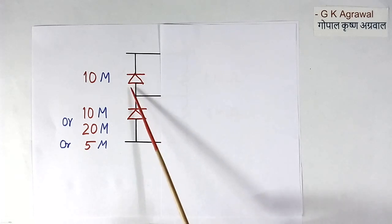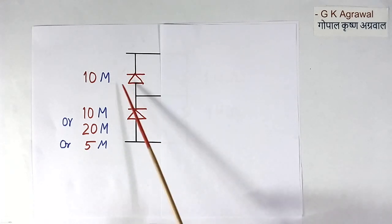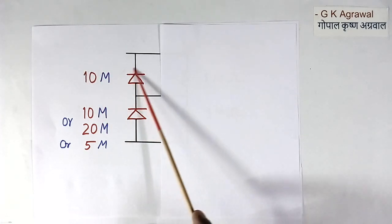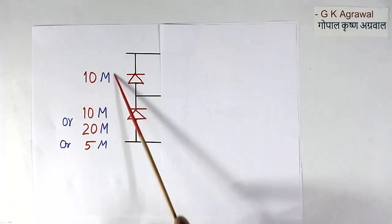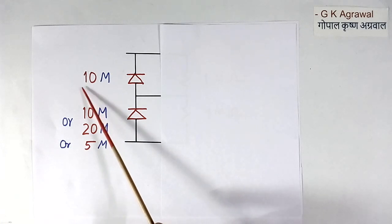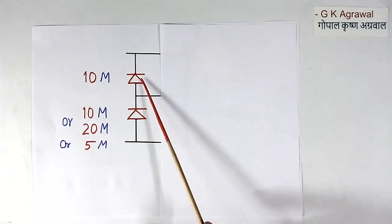Now suppose leakage resistance due to leakage current is 10M ohm for the diode. Generally this 10M ohm is not fixed. It will vary too much from diode to diode or depends upon voltage also.